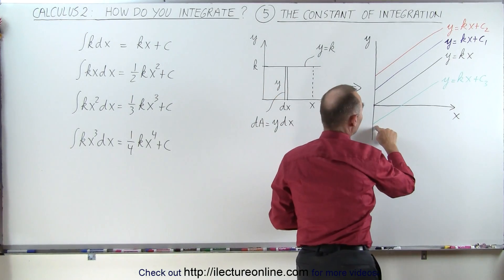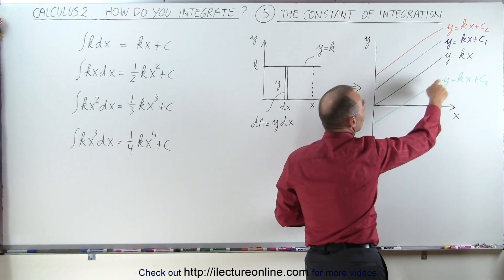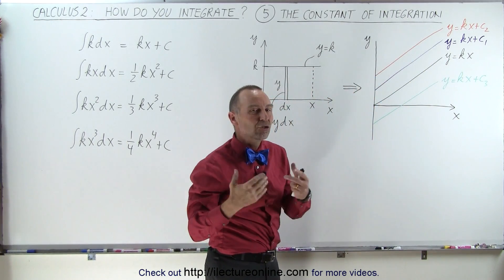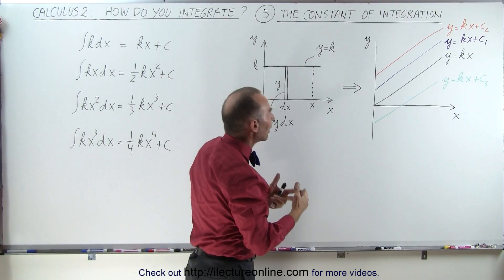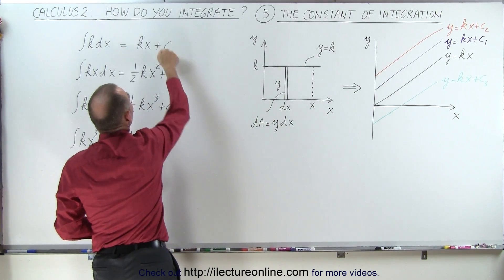It can be a negative constant, it can be a positive constant. Basically, in this situation, the constant represents the y-intercept. We just don't know anything about where that y-intercept is, so we just represent it by a general constant.